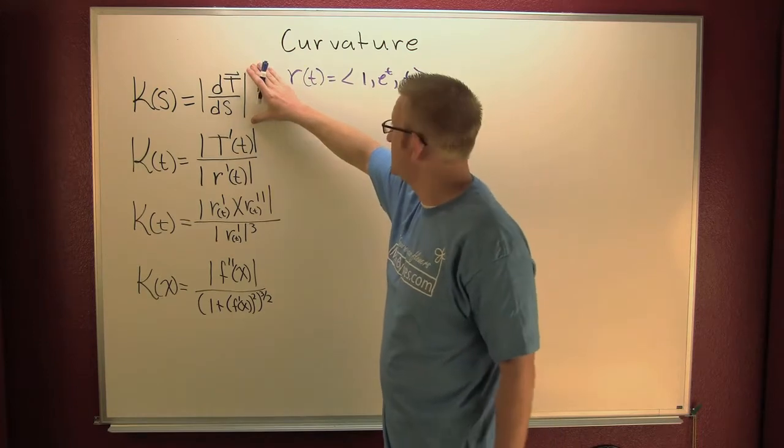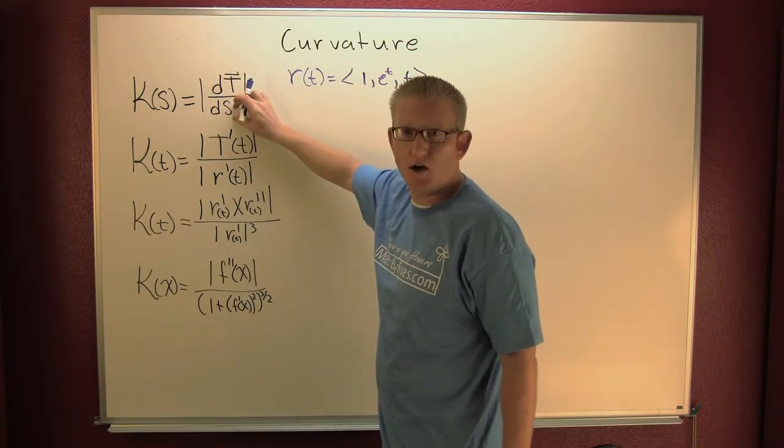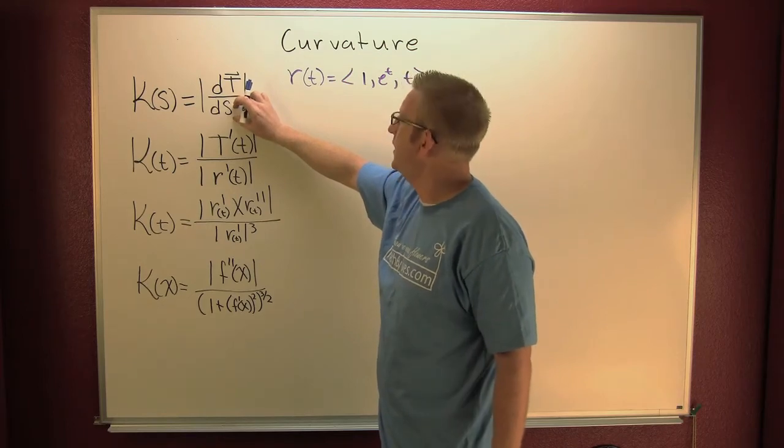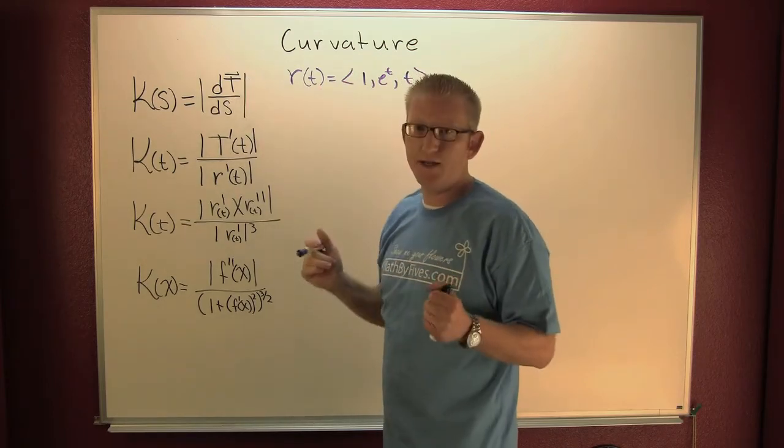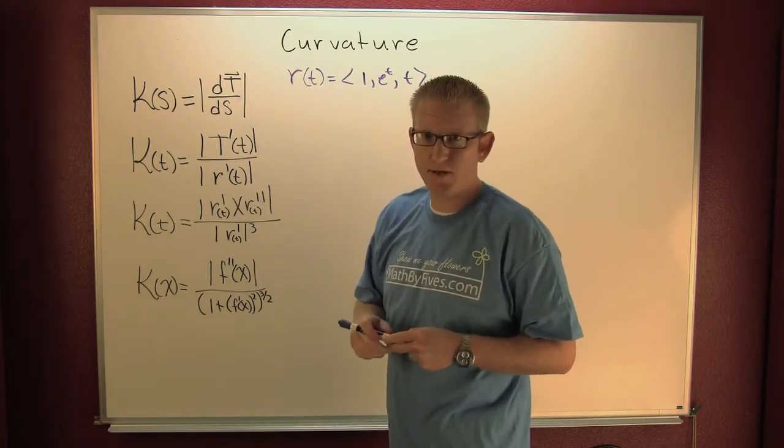First is our conceptual definition, where it's the change in the unit tangent with respect to the arc length. That's all fine and dandy, but it requires an arc length parametrization, which can be rather taxing at times.